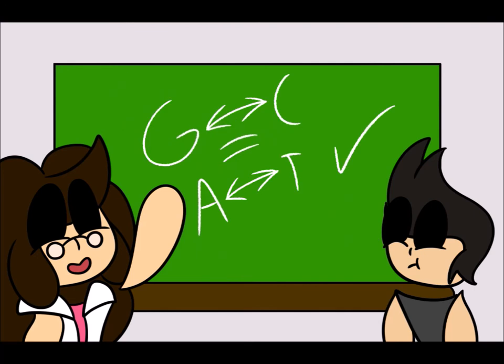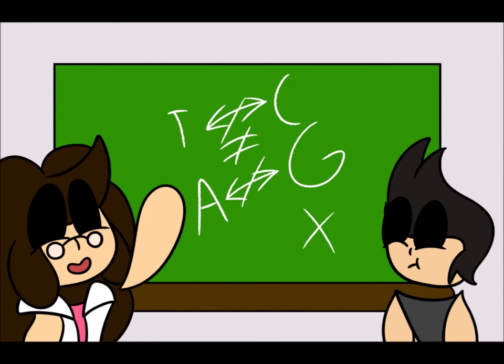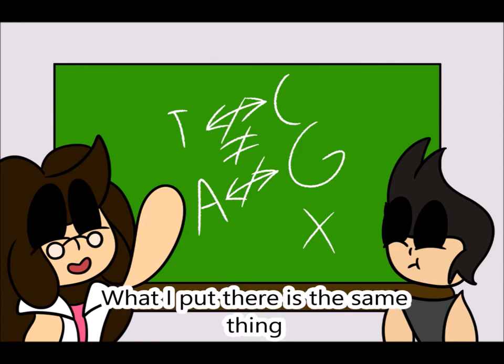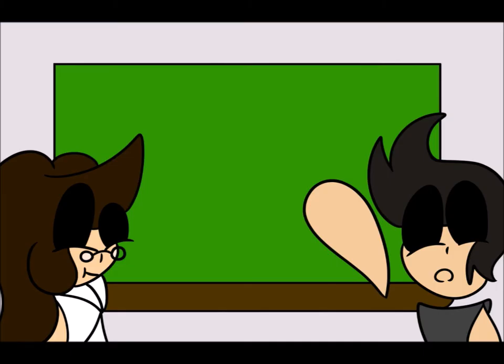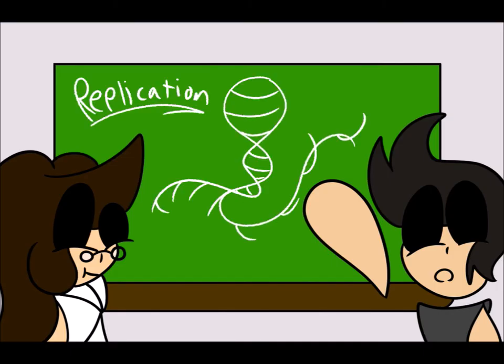The sugars go together like puzzle pieces. The two base pairs, like C and G and A and T, go together. Bonds like A and C or G and T can never go together.